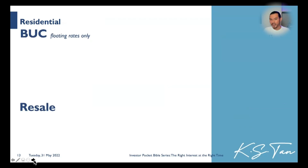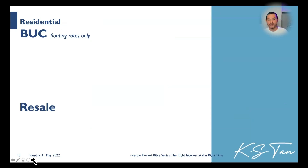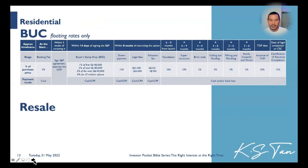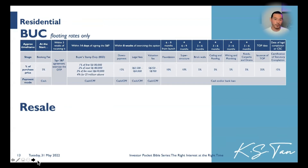Next, we need to talk about residential properties. BUC — building under construction — has only floating rates unfortunately. So if you're buying a new build property, there is no fixed rate, only floating rates available. At the bottom, we are comparing this to the resale payment scheme. This is a typical progressive payment schedule, and I'm going to run through this sequence quickly with you.